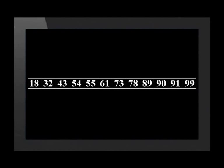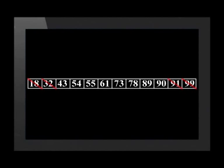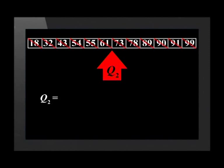Let's look at an example. The following set of 12 marks was obtained for a class out of 100: 18, 32, 43, 54, 55, 61, 73, 78, 89, 90, 91, and 99. This data has already been arranged in ascending order. We start by finding the median or Q2 value. We cross off the first and last numbers, then the second and second last, and carry on crossing out until we get to the middle. In this set of data, the median is between 61 and 73, so the median equals (61 + 73) ÷ 2, which equals 67.